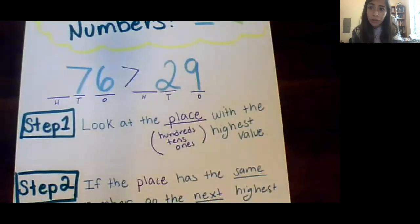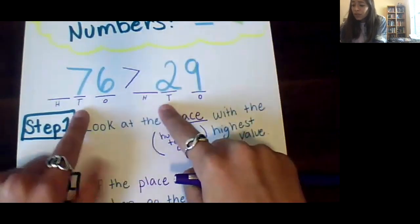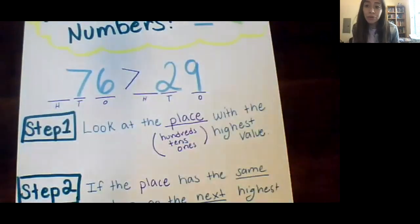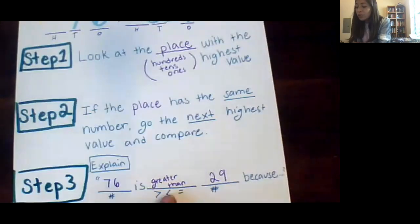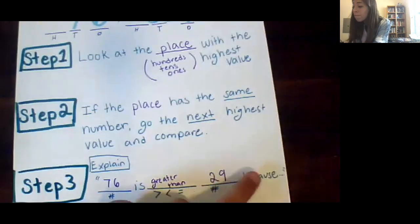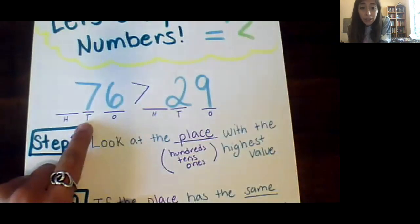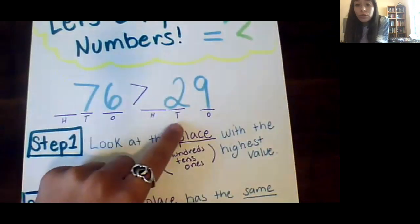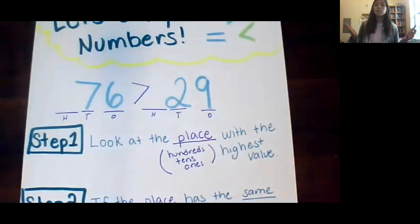What place value did we look at? We looked at the tens. So if I'm going to explain this to my friend or maybe mom or dad or brother and sister I'm going to say that 76 is greater than 29 because there is a 7 in the tens place in 76 and a 2 in the tens place in 29. And just like that I have proven why 76 is greater than 29.